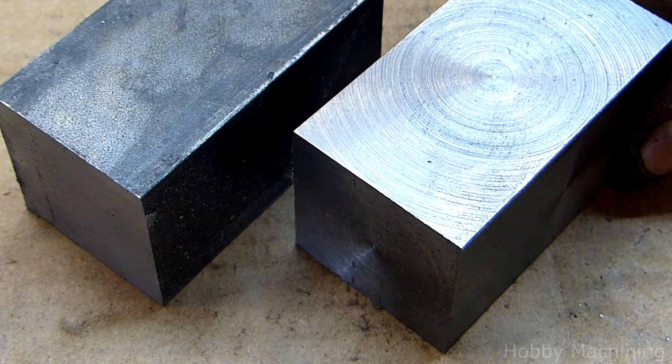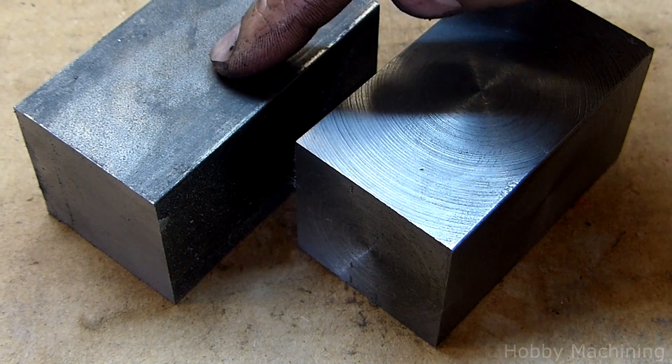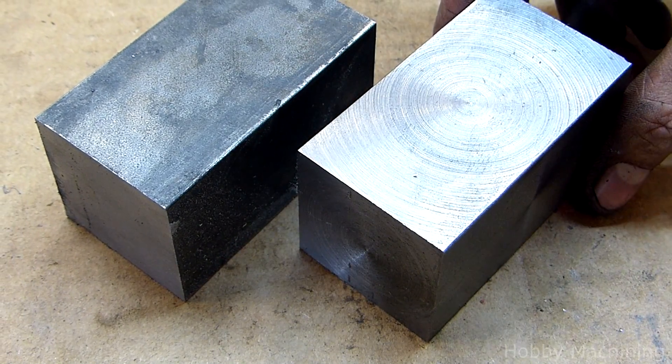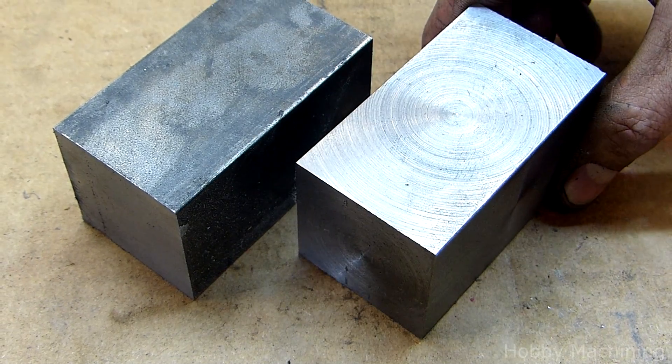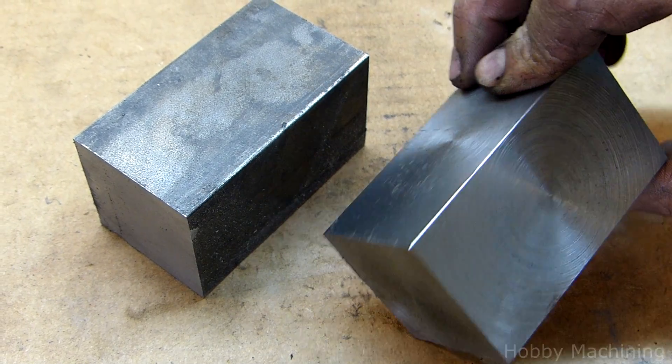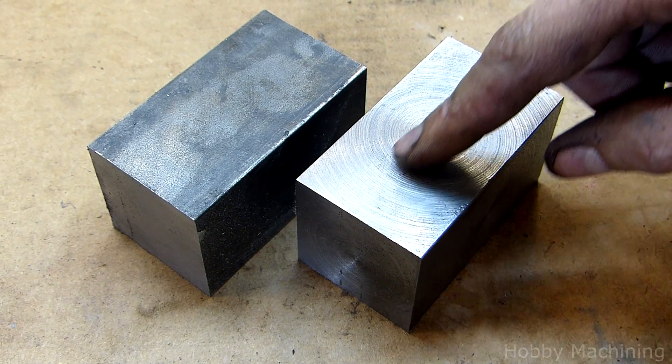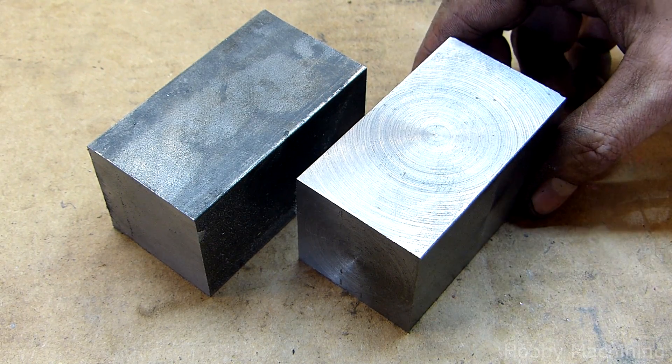And here's our squared up block. It started life looking very similar to this one here. Now this looks pretty square but it probably really isn't. And when you need precision as you usually do when you're machining something, you need to take matters into your own hands and make sure that what you're working with is accurate.